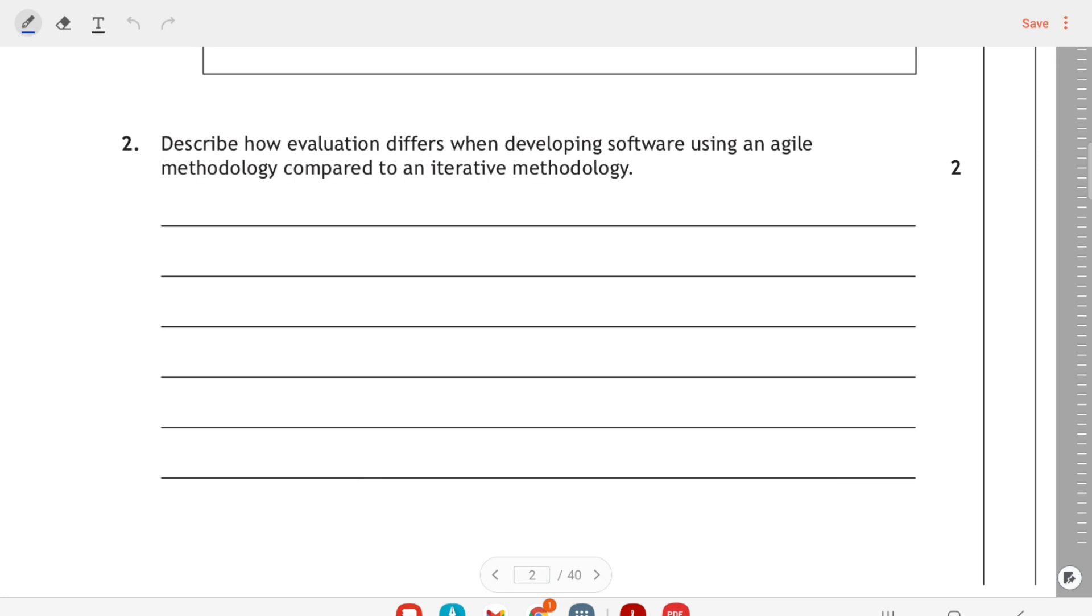So we have to describe how evaluation differs. We're not just describing the differences in general between agile and iterative—specifically it's about evaluation. So how does that differ in agile compared to an iterative methodology? Well, you would talk about what is evaluation like in agile versus what is evaluation like in iterative. So in agile, evaluation is ongoing.